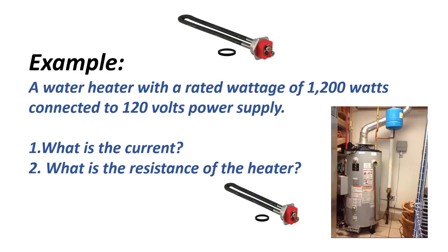Let's proceed to our example. A water heater with a rated wattage of 1,200 watts is connected to a 120-volt power supply. What is the current? And number two, what is the resistance of the heater?